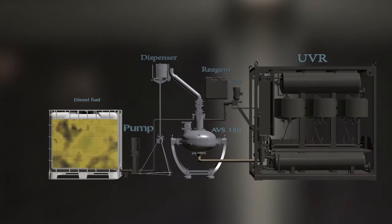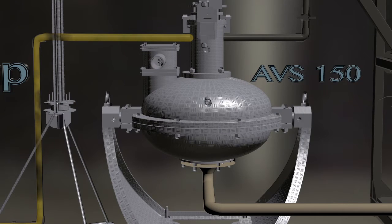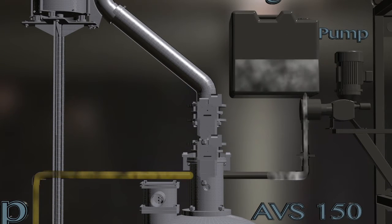We pour diesel fuel into the tank with a volume of 1 cubic meter. It is pumped into the working chamber of AVS150. The reagent is fed at the same time from a 30-liter barrel.